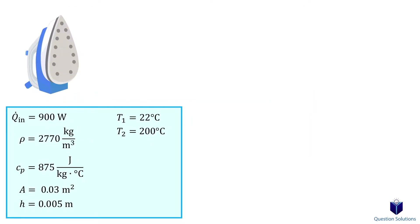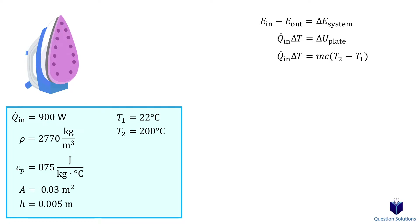Now we will start with our energy balance equation, taking the base plate as the system. Energy in minus energy out is equal to the change in energy of the system. The energy going in is heat transfer in, and since this is happening over a certain time period, we need to multiply it by delta t. There is no energy out since there is no heat loss, and that's equal to the change in internal energy of the system, which in this case is the plate.